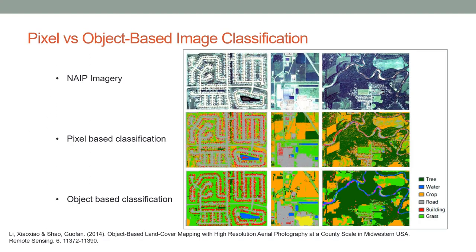This slide highlights the comparison between pixel-based and object-based image classification. The NAEP imagery used has a one-meter resolution. In the second row, the pixel-based classification shows the salt and pepper effect — particularly in the forest class, furthest to the right. Whereas in the third row, the object-based classifications produce maps that are much clearer and cleaner, without the salt and pepper effect, which is a distractor.